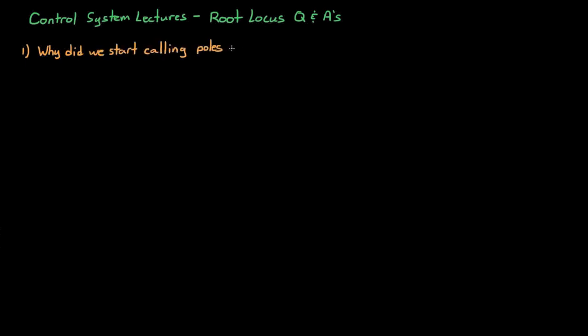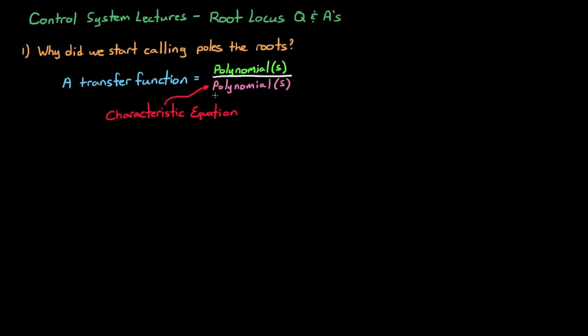I was asked why do we start calling the poles of a transfer function the roots, like we do here in a root locus? Well, a system transfer function is made up of two polynomials, one in the numerator and one in the denominator. The polynomial in the denominator is called the characteristic equation because it characterizes the stability of the system. If the polynomial in the numerator equals zero for some value of s, then the entire transfer function equals zero and that value of s is called a zero. If the polynomial in the denominator equals zero, then there's a divide by zero and the transfer function blows up to infinity, and that value of s is called a pole.